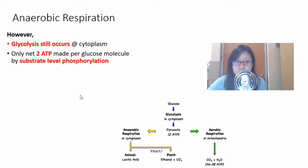However, glycolysis still occurs in the cytoplasm. It makes a net 2 ATP per glucose molecule. Previously, in aerobic respiration, we can make 32 ATP per glucose molecule. But now, we can only make 2 ATP per glucose molecule. It's not much, but at least it's something.